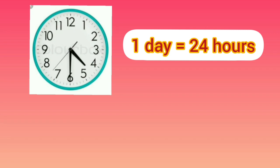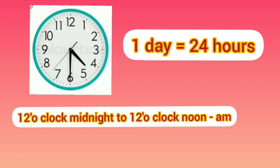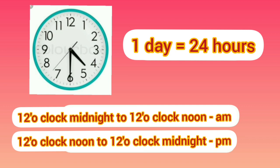Dear kids, you have learnt about time. You all know that in one day there are 24 hours. To show 24 hours in a 12 hour clock, we use AM to show the time starting from 12 midnight to 12 noon. And PM is used to show the time from 12 noon till 12 midnight.